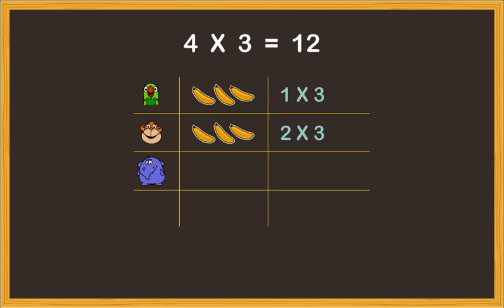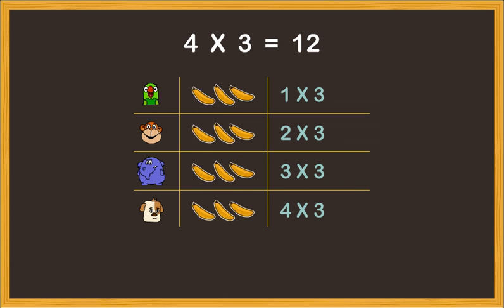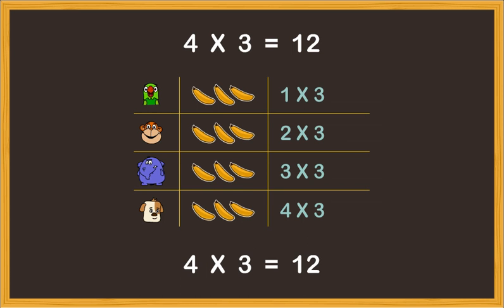For his third friend he needs three more bananas — this is three times three. And three bananas more for himself, so four times three. All together, for four people, Gul needs four times three bananas. Four times three equals twelve — Gul selects twelve bananas for his party.